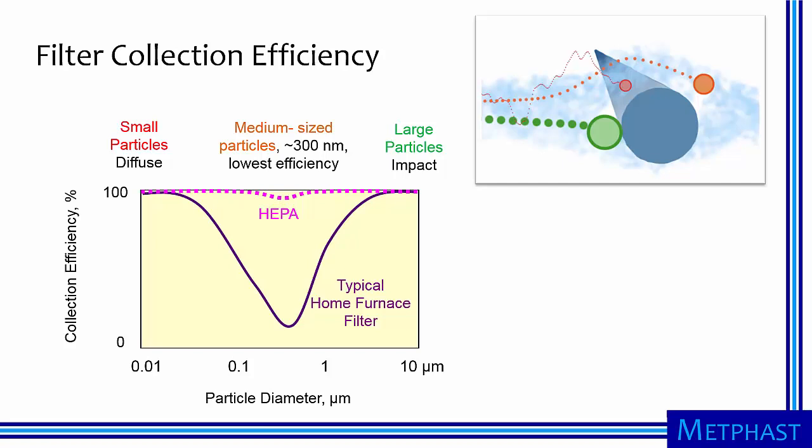Here I show particle collection efficiency by size for two different kinds of filters. The purple curve is typical of a low-efficiency filter, like a low-cost furnace filter. High collection efficiency is achieved for very small particles, say 10 nm in size, due to diffusion, and for large particles, larger than, say, 5 micrometers due to impaction. However, the lowest collection efficiency occurs for particles in the middle size range, about 300 nm, because diffusion and impaction have the least effect on these sized particles.